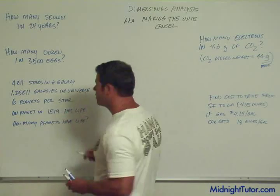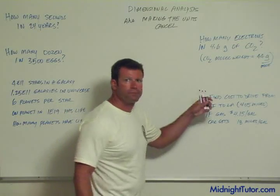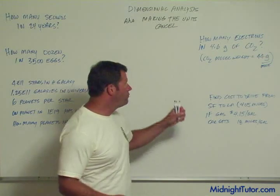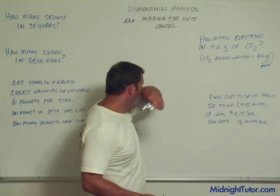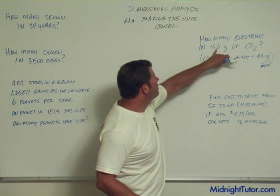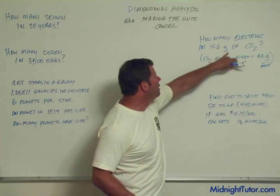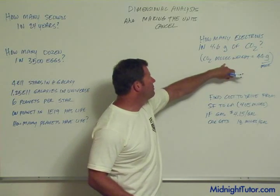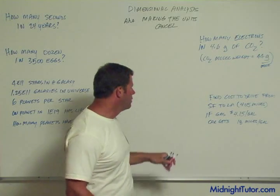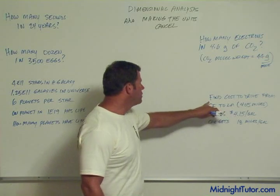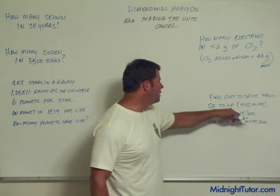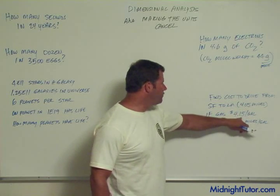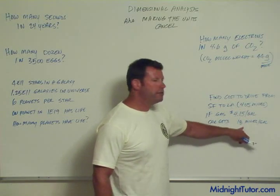This next one is a little more complicated. Here we have a classic chemistry problem: how many electrons are there in 4.6 grams of carbon dioxide? We're given the molecular weight of carbon dioxide so I don't have to look it up. And then here's a cost problem: find the cost to drive from San Francisco to Los Angeles, a distance of 405 miles. Gas is $4.15 a gallon and our car gets 18 miles per gallon.